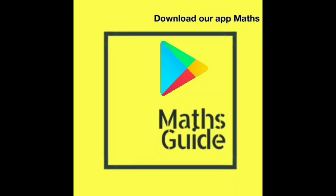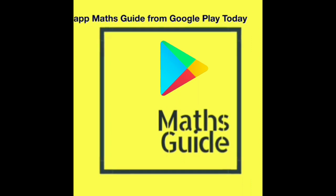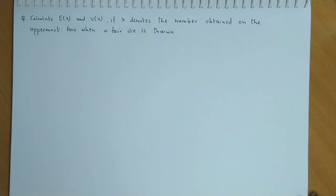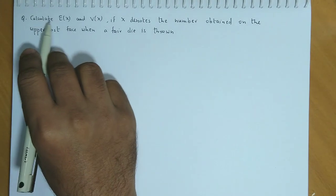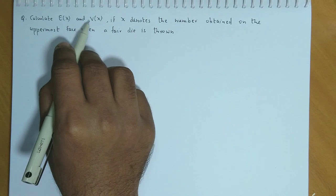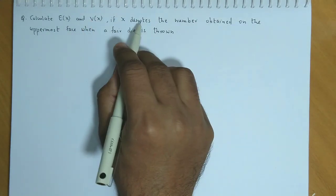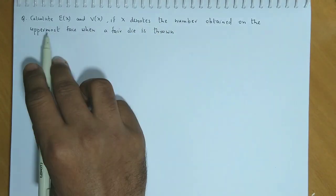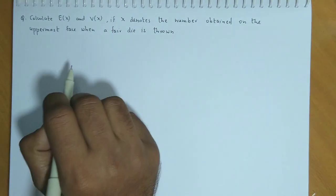Download the App Maths Guide from Google Play today. This is a probability distribution related example. Calculate E(X), that is the expected value of X, and V(X), the variance of X, if X denotes the number obtained on the uppermost face when a fair die is thrown.